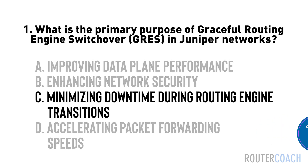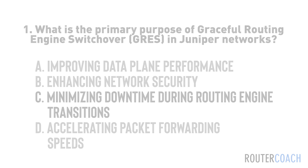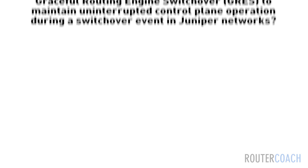The answer is C. The primary purpose of GRES in Juniper Networks is to minimize downtime during routing engine transitions. GRES allows for a graceful and seamless switchover from the active routing engine to the standby routing engine in the event of a failure or planned maintenance.